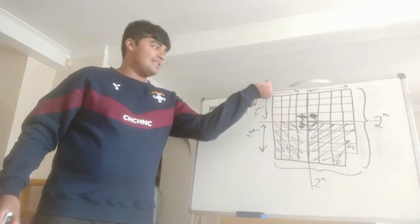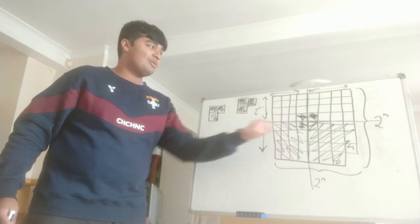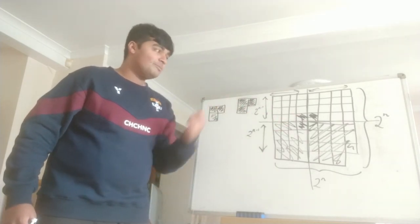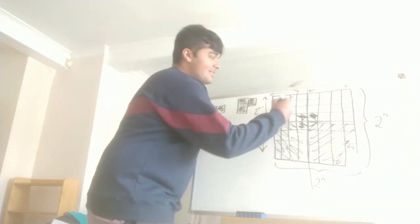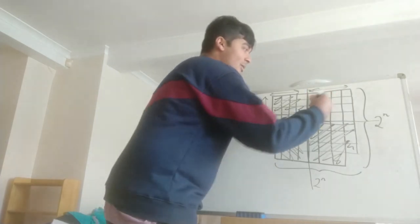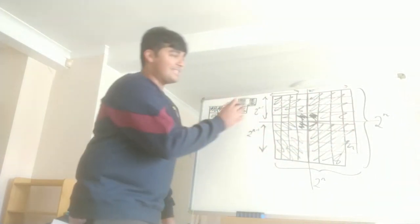Similarly, for this quadrant, this is a 2^(n-1) by 2^(n-1) chessboard with one corner covered by the tile. By assumption, we can cover the rest using these tiles. And similarly, for this final one, we can cover the rest using these tiles.